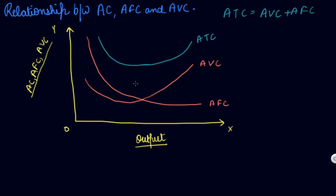So these are the three curves that we have plotted, and we have derived the average total cost curve from your average fixed cost and your average variable cost curve. Now let us do the comparison between the average total cost and the average variable cost curves.